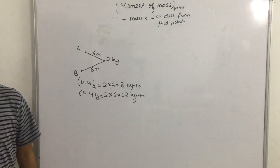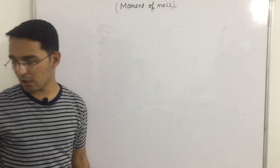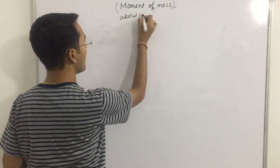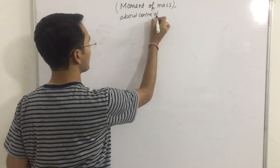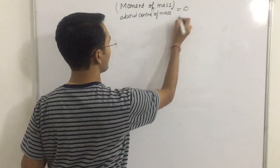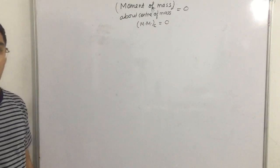Now, what we are going to learn is a famous property in physics: moment of mass about center of mass, that is always 0. M about C is always 0. Now we are going to prove this.